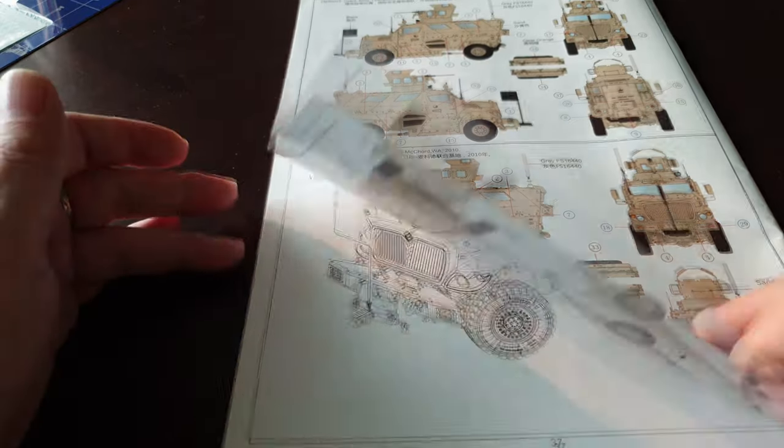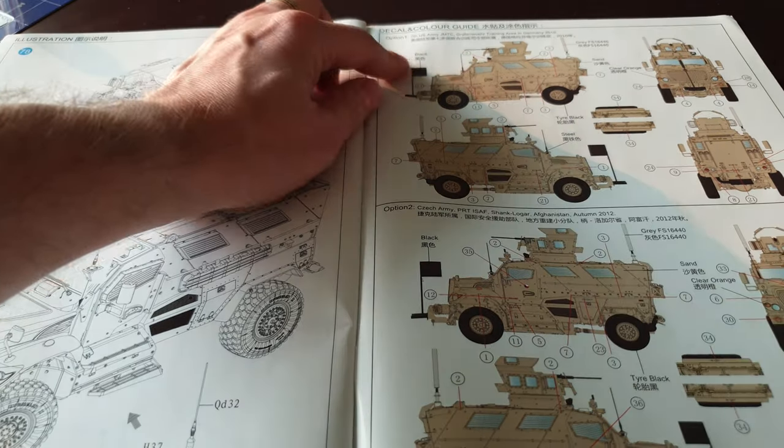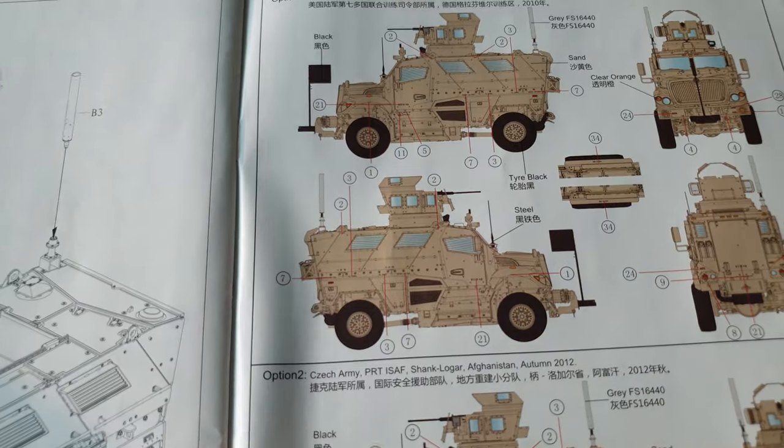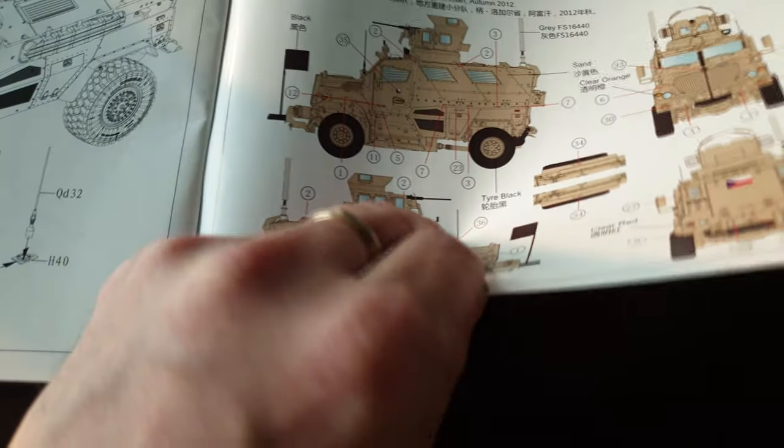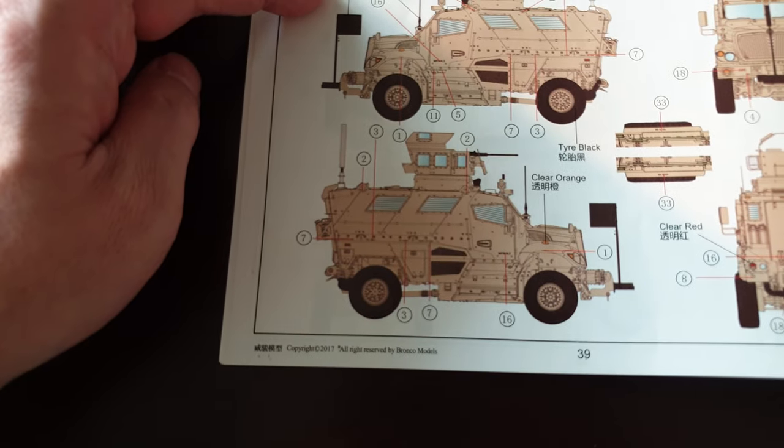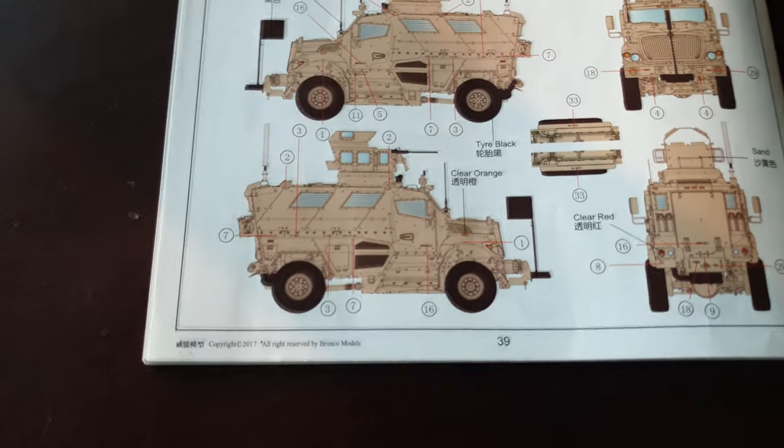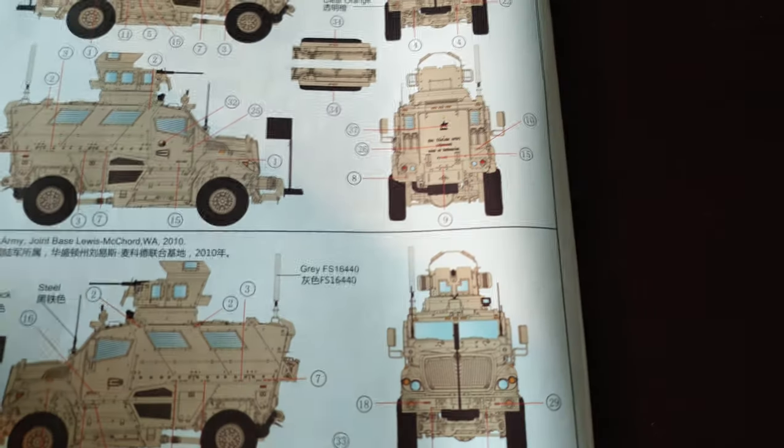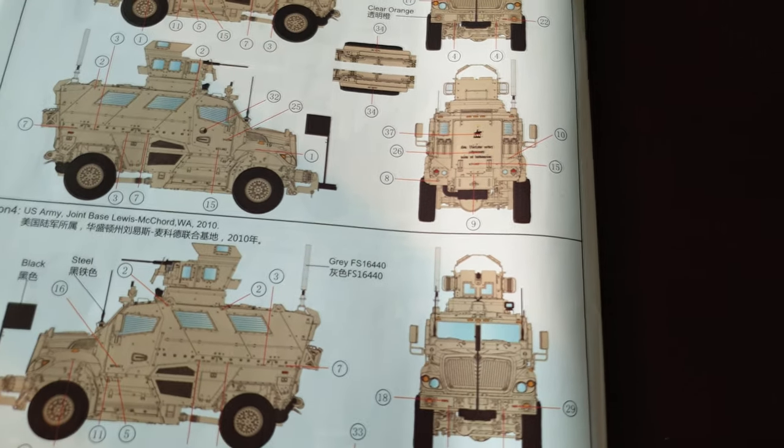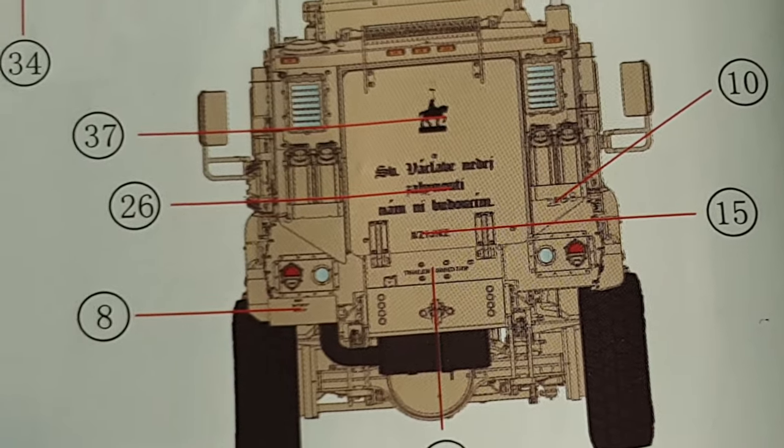In the back is the decal and color guide. You get four options. They have them referenced: the first one is in Grafenwoehr, Germany. Notice all of them are this desert camo so you haven't got a NATO camo on any of them. Czech Army Afghanistan 2012, Czech Army Afghanistan 2012, and U.S. Base Lewis-McChord Washington 2010. This one's probably the most attractive scheme because it has this interesting decal in the back saying something in Czech language. Anybody from Czech watching this maybe you can translate. Looks kind of cool, looks kind of interesting.